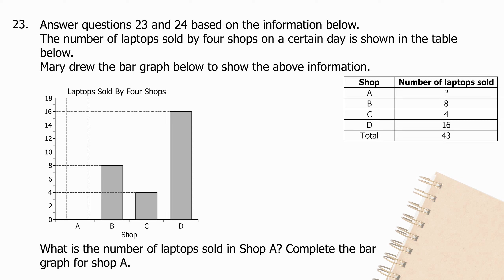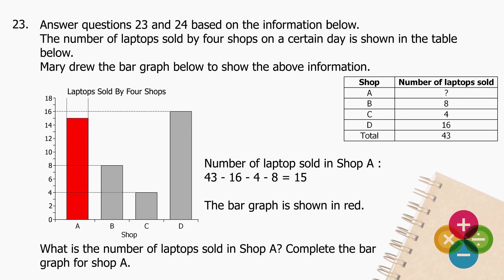Question 23: Answer questions 23 and 24 based on the table showing laptops sold by 4 shops. Mary drew a bar graph to show this information. What is the number of laptops sold in shop A? Complete the bar graph for shop A. The number of laptops sold in shop A: subtract 16 + 4 + 8 from 43 and the difference is 15. The bar graph is shown in red.